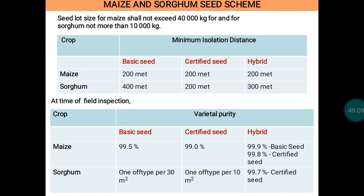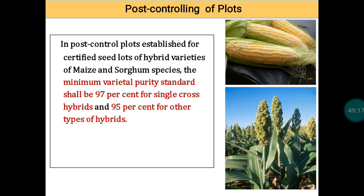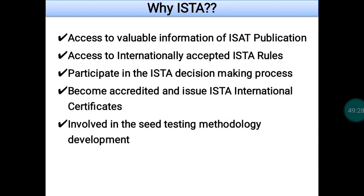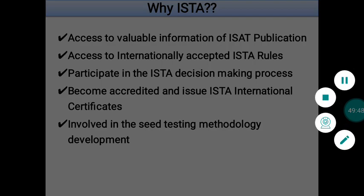Under OECD schemes, there is also a maximum seed lot size, similar to IMSCS. For maize, the maximum seed lot size is 40,000 kg; for small-seeded crops, 10,000 kg. Isolation distances are also specified: for maize, 200 meters for Basic and Certified Seed and 200 meters for hybrid; for sorghum, 400 meters for Basic Seed, 200 meters for Certified Seed, and 300 meters for hybrid. Varietal purity standards are also defined. This concludes the discussion on OECD schemes — in the next class we will discuss ISTA.